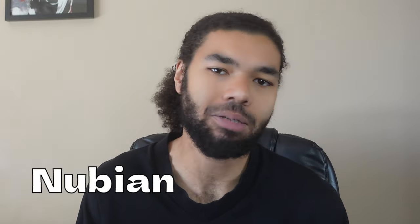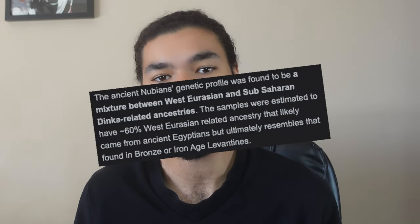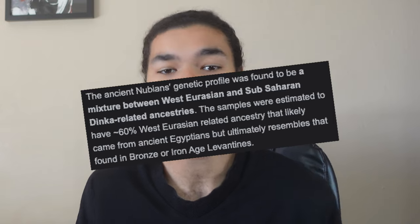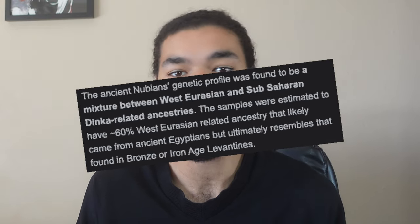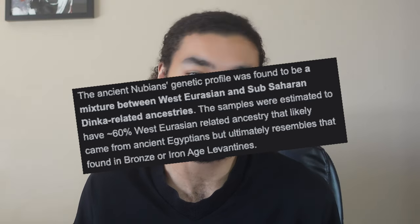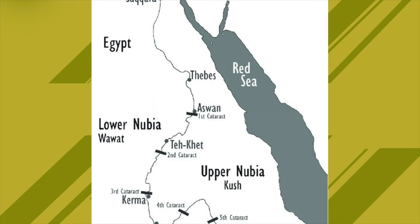The term Nubian doesn't actually refer to a specific group of people. Ancient Nubia was very diverse, consisting of people from different cultures, speaking different languages, and holding different religious beliefs. So think of it more as a kind of multicultural hub, although it is fair to say that the dominant culture was most likely very similar to that of their neighbours to the north — the Egyptians.